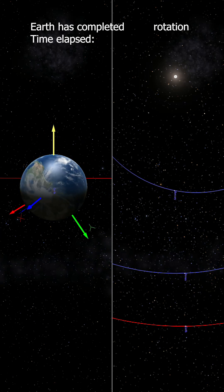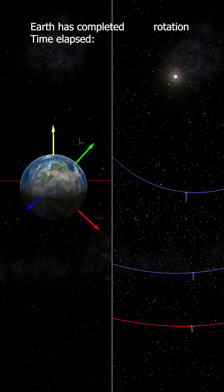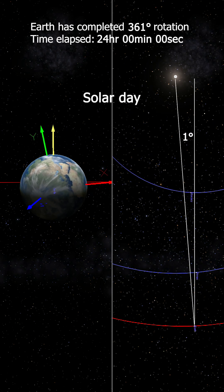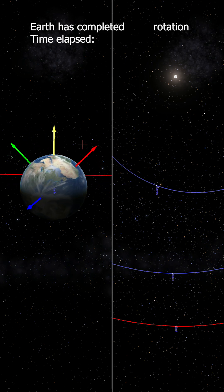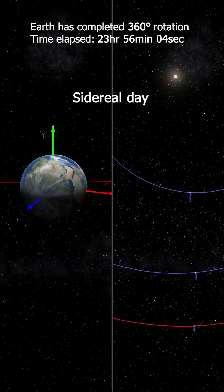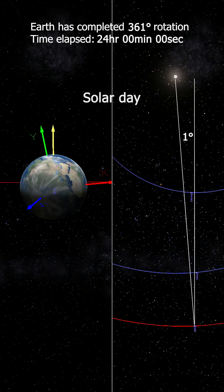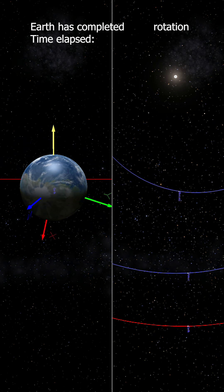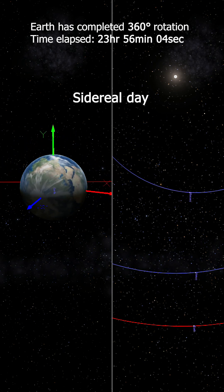A sidereal day defines one Earth rotation relative to the stars, while a solar day refers to one Earth rotation relative to the Sun. When the Earth completes a 360-degree rotation, the Sun will not be in the same position in the sky as the previous day, because during the time it takes for the Earth to rotate once on its axis, it also orbits a bit around the Sun.